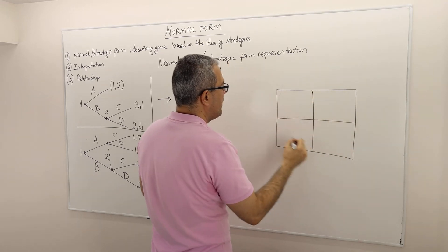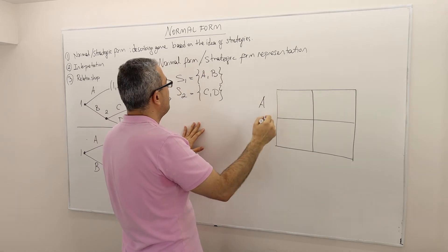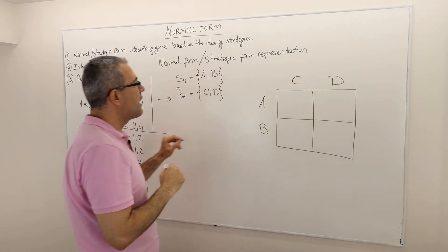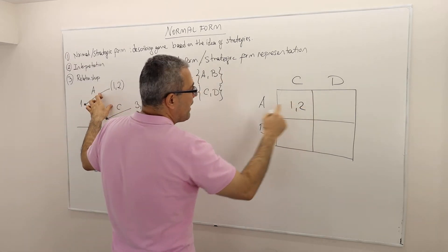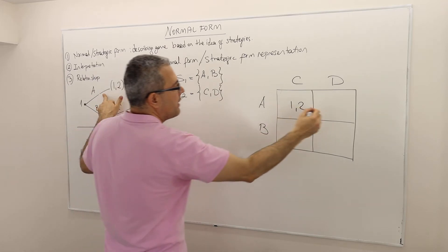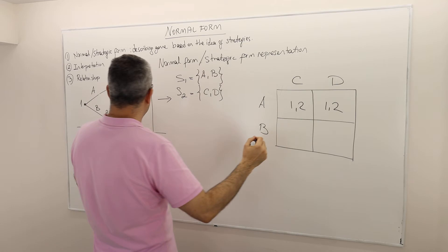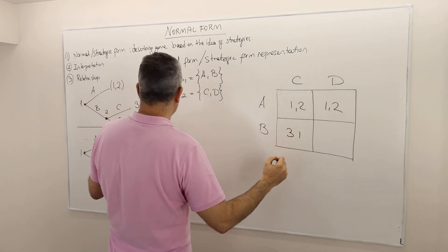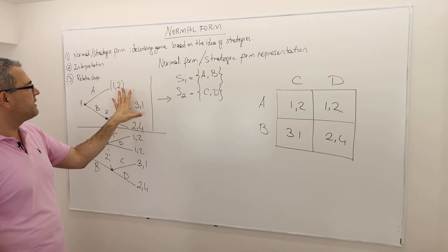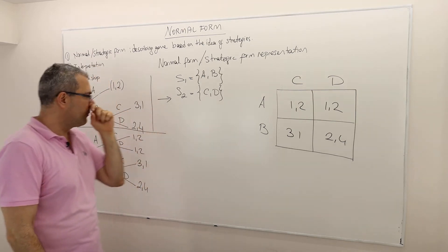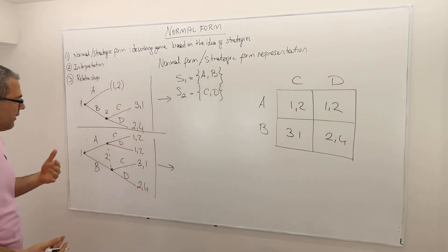As usual, player one is on the row and player two on the column. Player one has strategies A and B; player two has strategies C and D. When player one plays A, the payoff is (1,2) regardless of player two's choice. If player one plays B and player two plays C, it's (3,1); if D, it's (2,4). So we can represent this game tree with this strategic form.